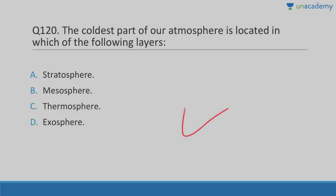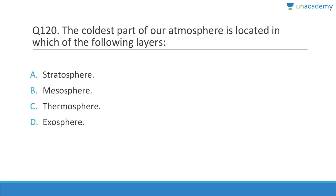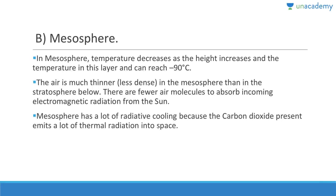Question 120: The coldest part of the atmosphere is at the top of the mesosphere. In the troposphere, temperature decreases with height; in the stratosphere it increases again; in the mesosphere temperature declines to its minimum — as low as minus 90 degrees Celsius. Air is much thinner in the mesosphere than the stratosphere, with fewer molecules to absorb electromagnetic radiation.